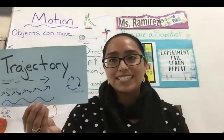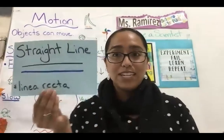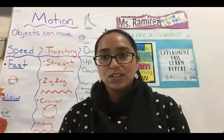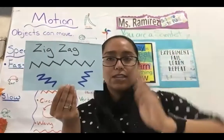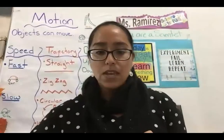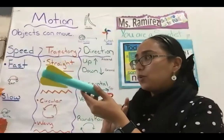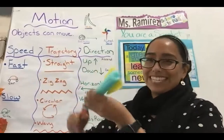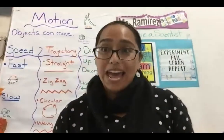The next thing we're going to talk about is trajectory. Trajectory is the path an object follows when it's moving. Things can move in a straight line - if you take your hand and make it nice and straight, there's a straight line, like when your teacher tells you to walk in the hall in a straight line. Things can also move in a zigzag or a wave motion. Things can also move in a circular path. I have a little projectile rocket and I'm going to fling it into the air. The path that it takes is called its trajectory. It went up and then it went down - that's its path or trajectory.